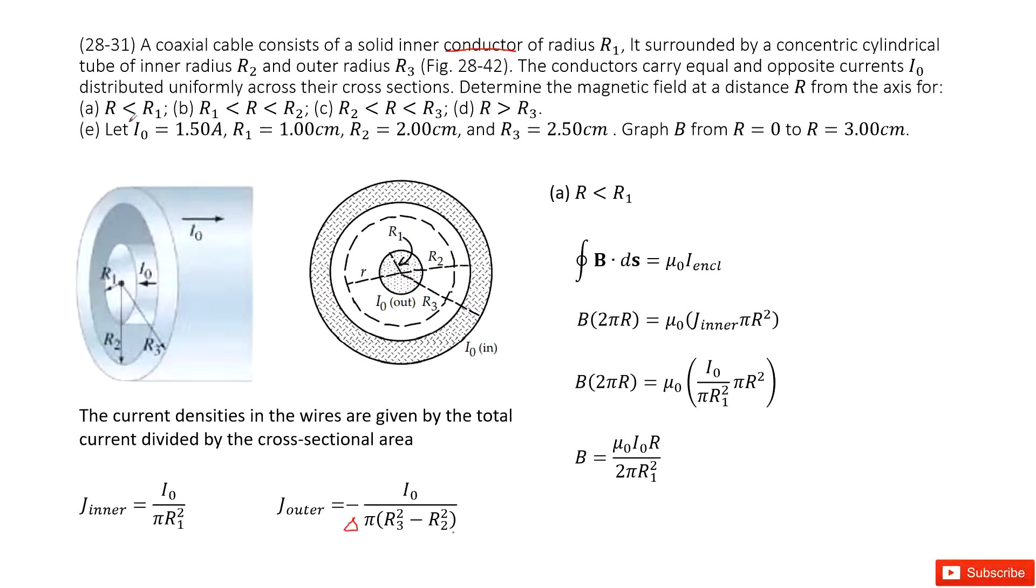In the first case, we consider r is smaller than r1. We can draw an enclosed path like this one. As Ampere's law tells us, B times the enclosed path 2πr equals μ0 times the current enclosed. The current enclosed uses the current density times its cross-sectional area, πr², and we put in the inner current density. We can reorganize and simplify it to get the function.